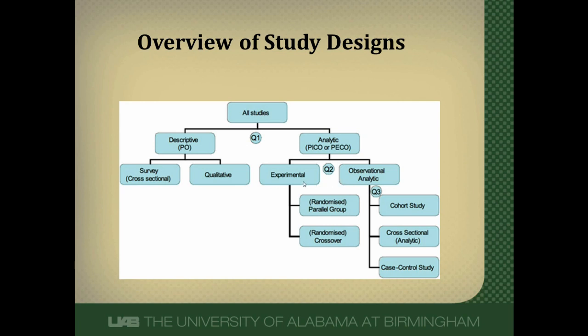In experimental studies, researchers do an experiment — they give some factor and look to see its effect on the outcome. This is the randomized control trial. In observational studies, researchers don't do anything to patients; we just watch what happens to them and try to describe which risk factors are present, what outcomes are present, and whether there's a relationship between them. The classic observational studies are cohort studies, case control studies, and cross-sectional studies.